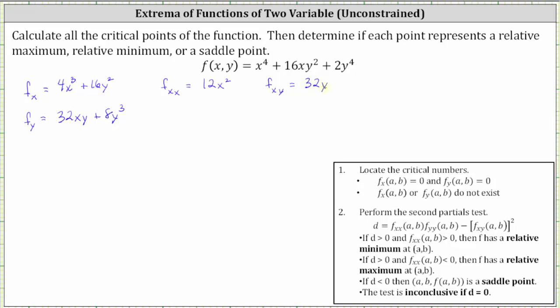We also need the second order partial with respect to y, which means we differentiate the first order partial with respect to y, with respect to y again, treating x as a constant, which gives us 32x plus 24y squared.